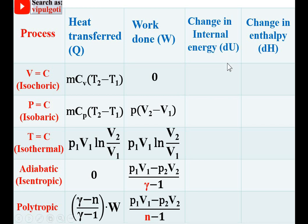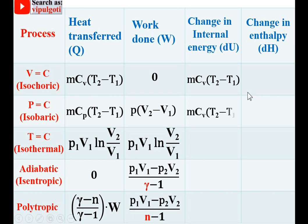For internal energy: change in internal energy is always mCvΔT and this specific heat is always at constant volume — this formula is the same for all processes. For isobaric it is mCv(T2 − T1); for isothermal, since temperature is constant, ΔT = 0, so change in internal energy is 0. For adiabatic and polytropic processes it is also mCvΔT.